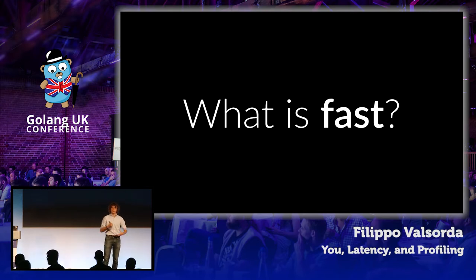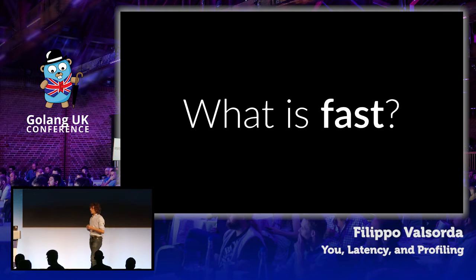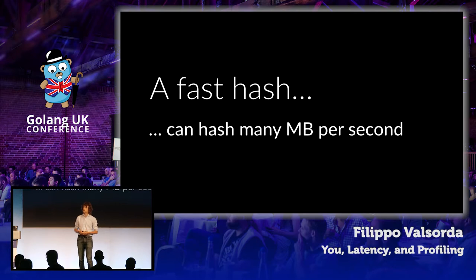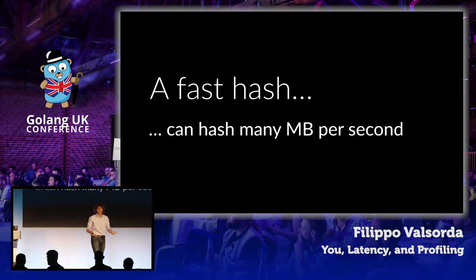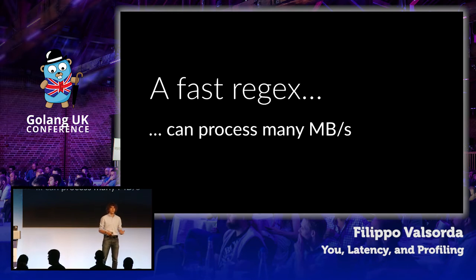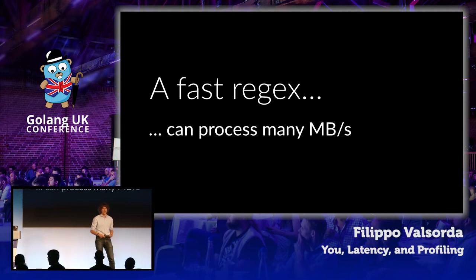This might feel a bit philosophical, but we need to know our target before we optimize for it. In abstract, we probably know what we mean by fast, but let's see a few examples. There are cases that are pretty straightforward: a fast hash for crypto is something that can hash many megabytes per second. Just like a fast regex engine is one that can match a lot of data very fast — megabytes per second, gigabytes per second.